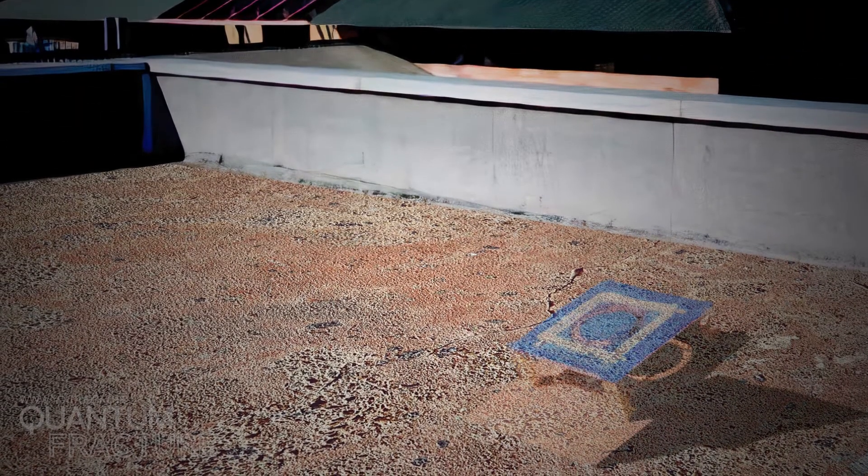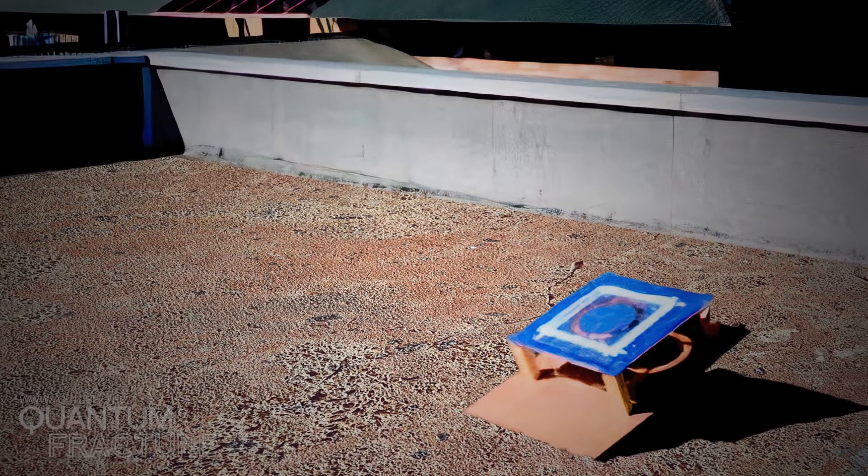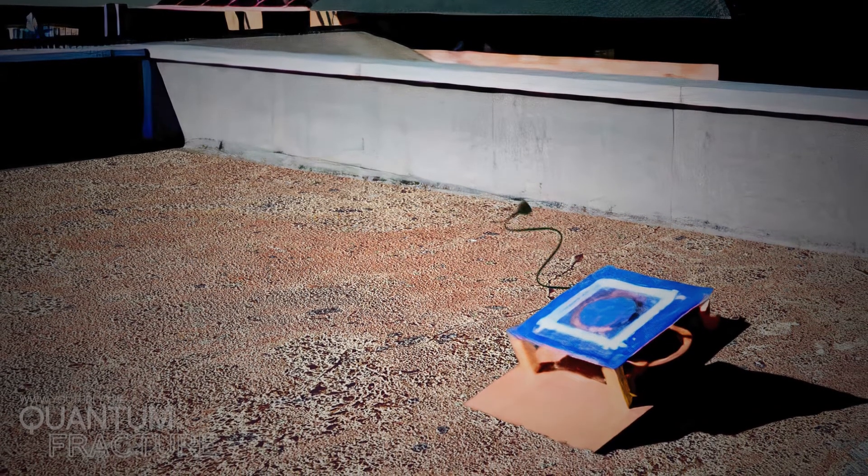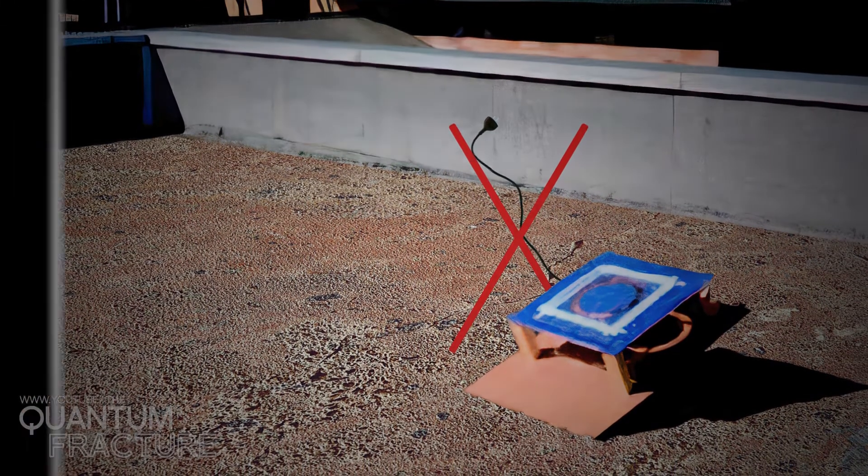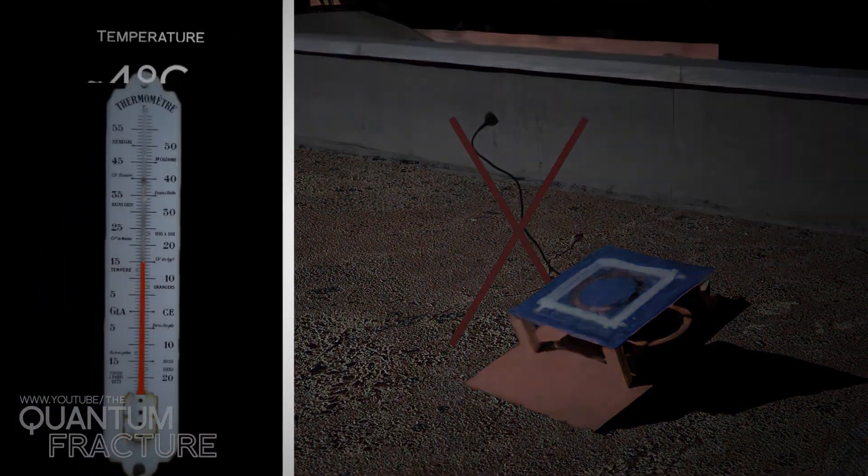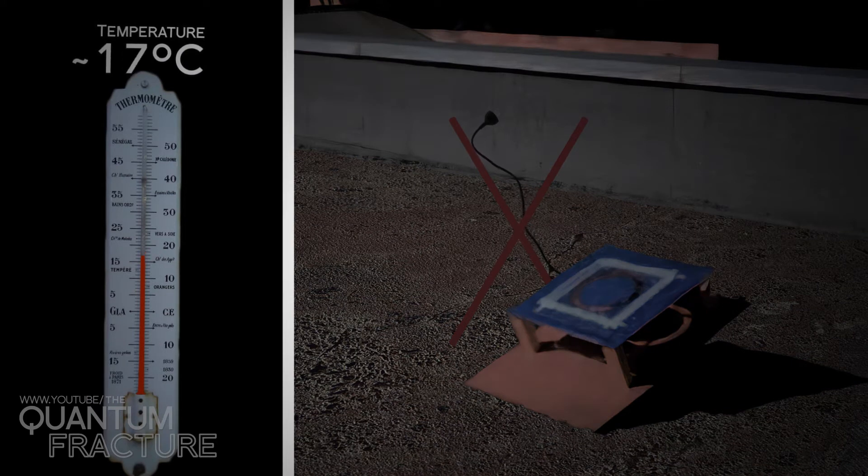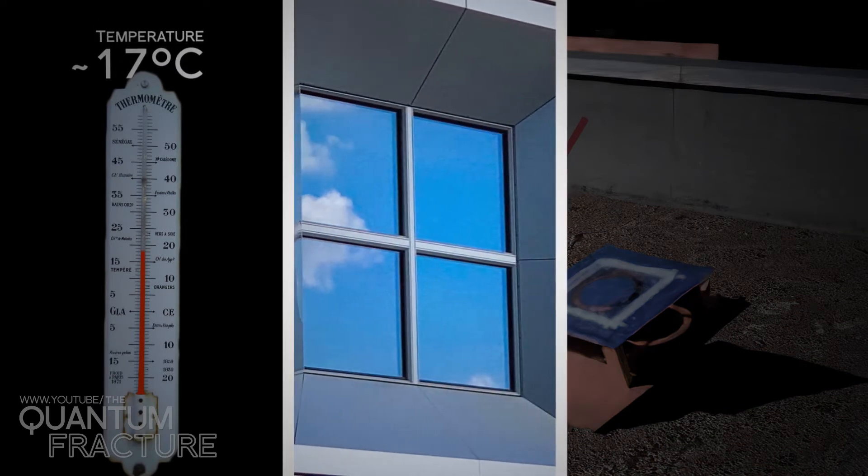Some researchers from Stanford University left a strange device on the roof of their building. It didn't have a battery and it wasn't plugged into any power source. That noon, it was cool outside. The thermometer was at around 17 degrees, but the sun was beating down from a cloudless sky.